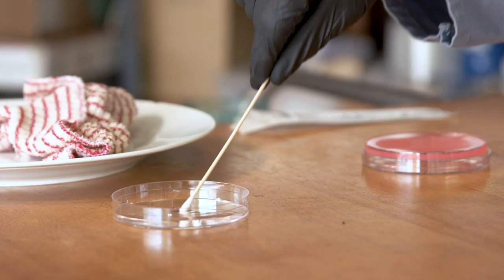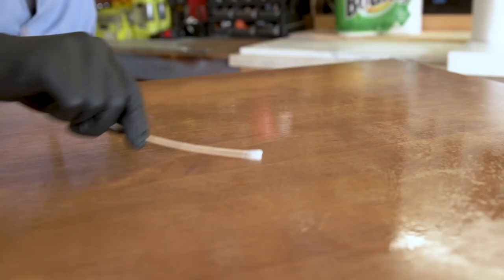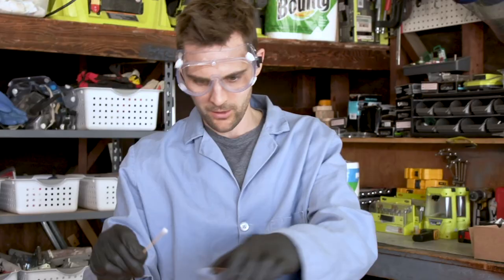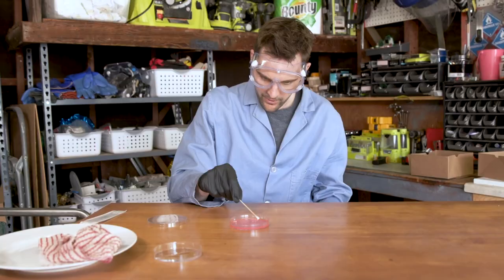We're going to put this cotton swab into some sterile water. Now we're going to go ahead and collect as much bacteria as we possibly can from the surface that we cleaned up. I'm going to flip this over and swab in a zigzag pattern first, and then rotate as I do that.